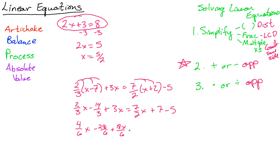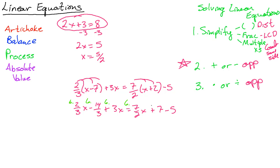When you multiply everything by 6, all the denominators cancel. Some people like to do it in two steps, but it's not totally necessary. Multiplying everything by 6 gives us 4x − 28 + 18x = 21x + 42 − 30. Now we have multiple x's, so let's combine everything.